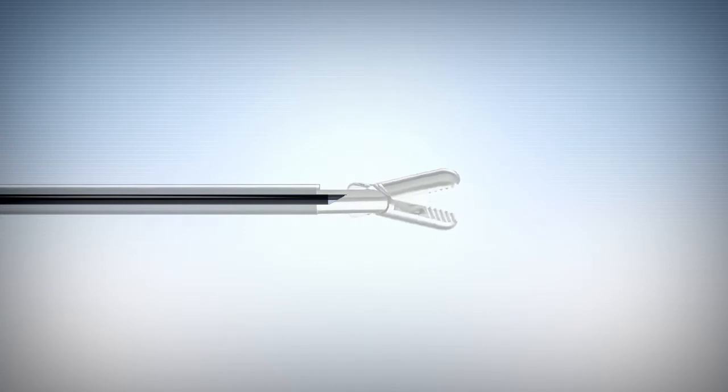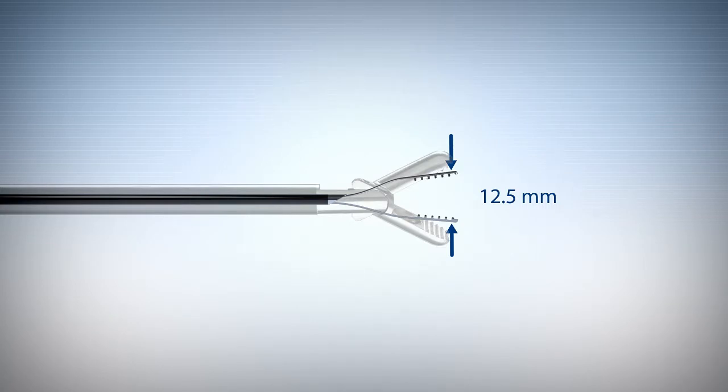The grasper jaws open up to 12.5 mm to grasp difficult structures like distended gall bladders and the proprietary steel shaft provides the strength and rigidity necessary for secure tissue retraction.